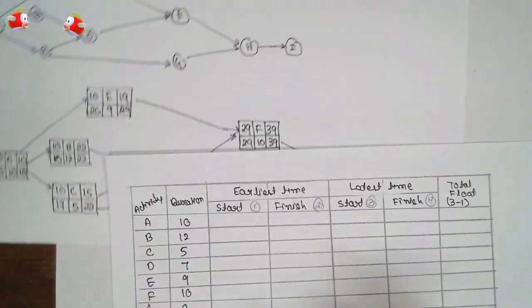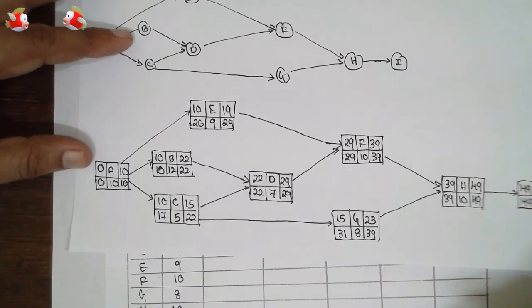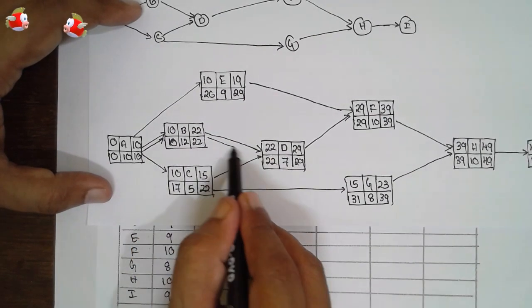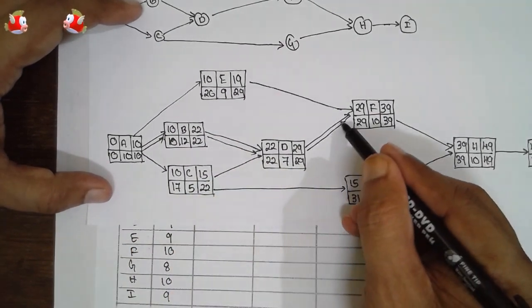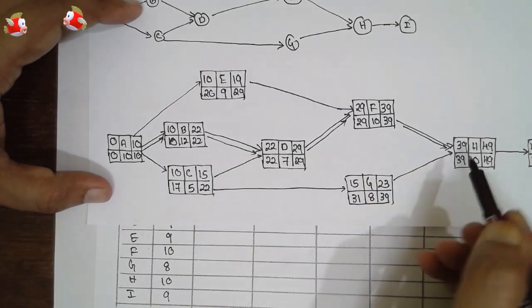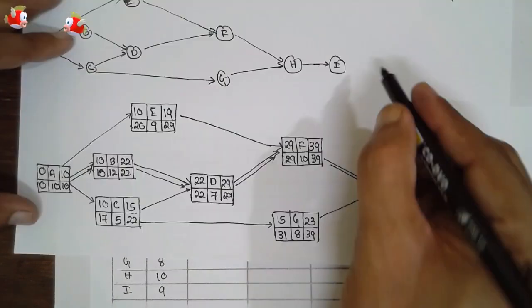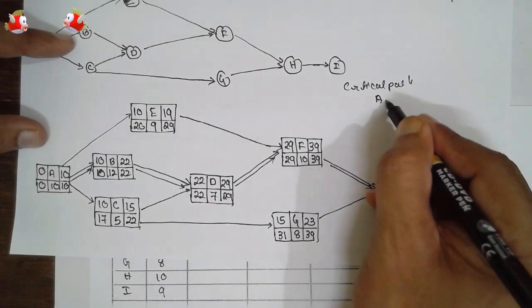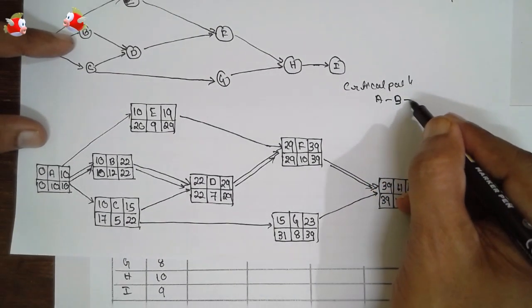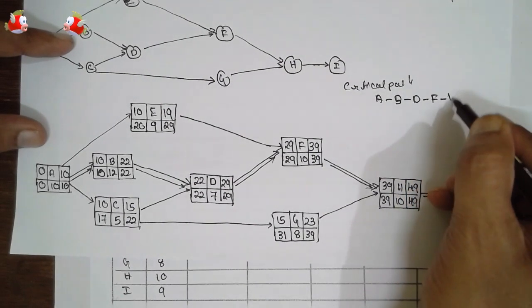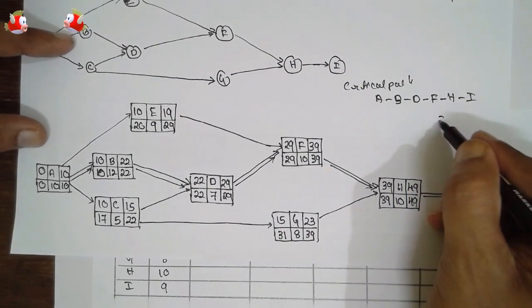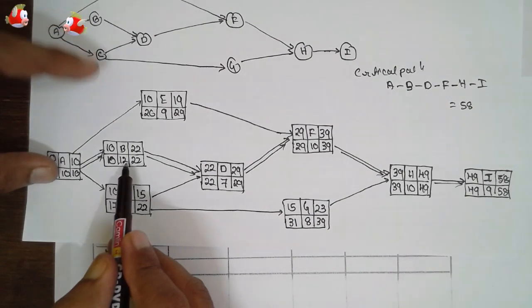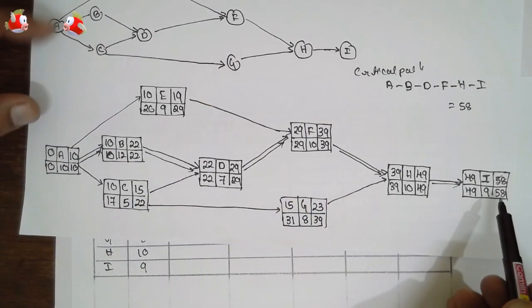Now based on the network diagram, first draw the critical path here: 10, 10, 0, 22, 22 is the critical path. 29, 29, 39, 39. This is the critical path. Write the critical path: A dash B, B dash D, D dash F, F dash H, H dash I. If you calculate, the value will be 58. That means 10 plus 12 plus 7 plus 10 plus 10 plus 9. This is nothing but 58.